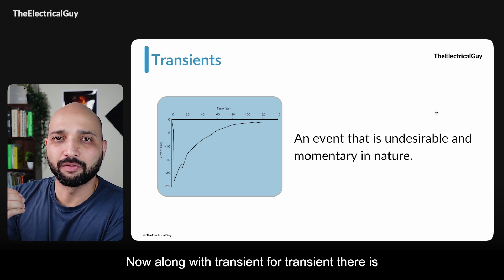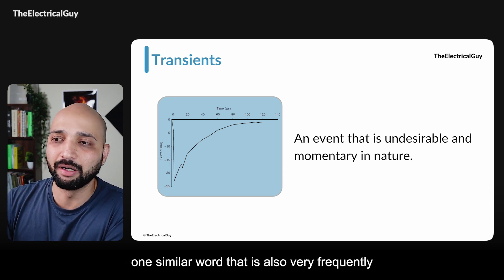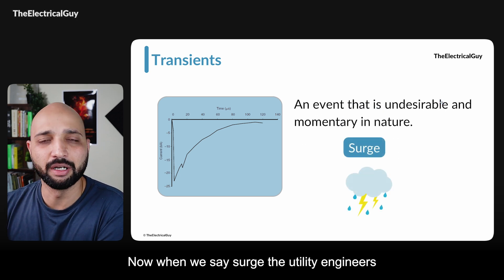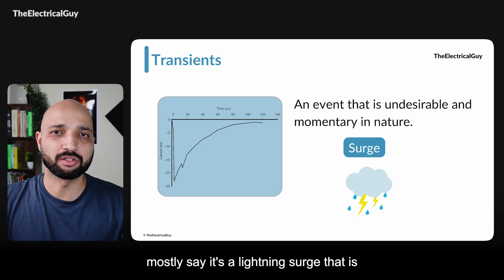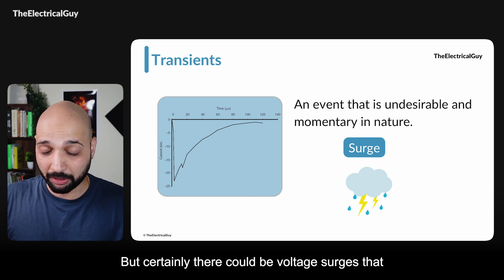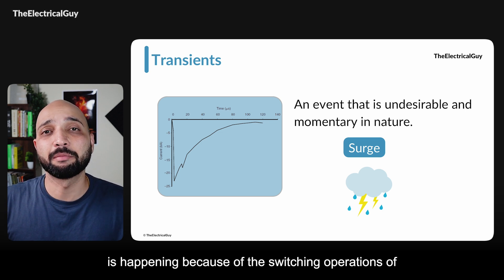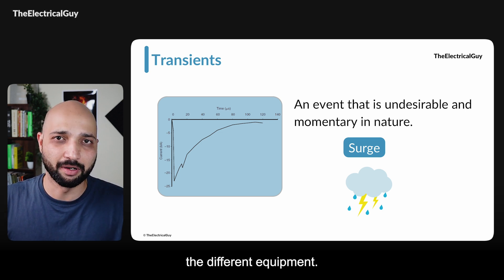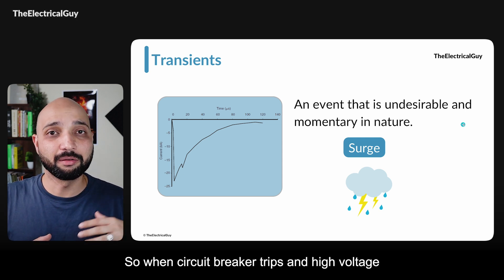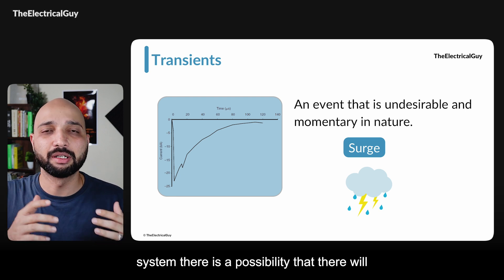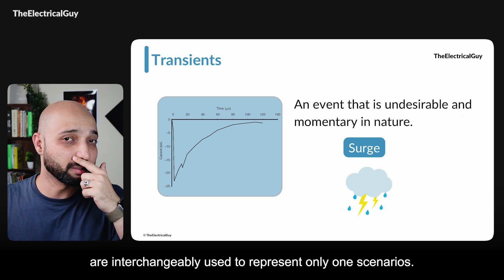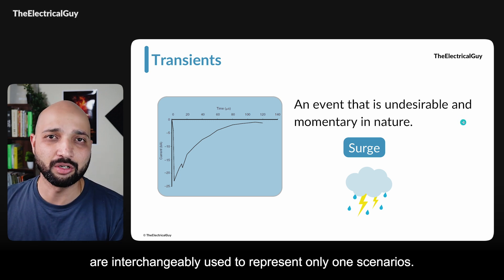Along with transient, one similar word frequently used is surge. Utility engineers mostly refer to lightning surges happening in the system, and to protect against that we need lightning arrestors. But there could also be voltage surges because of switching operations of different equipment, which is seen in high and extra high voltage systems. When a circuit breaker trips in a high voltage system, there is a possibility of a switching surge. Surge and transient are words interchangeably used to represent the same scenario.